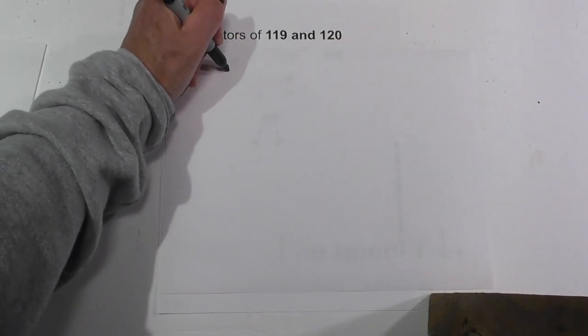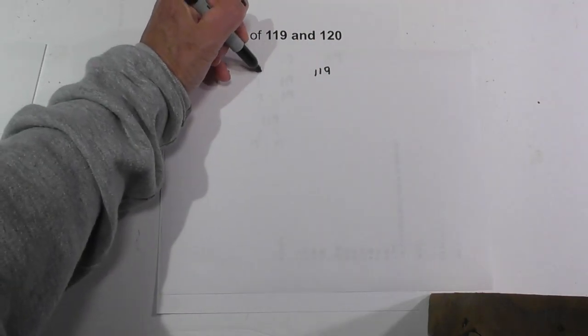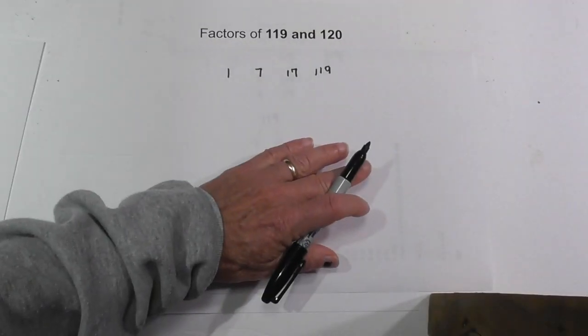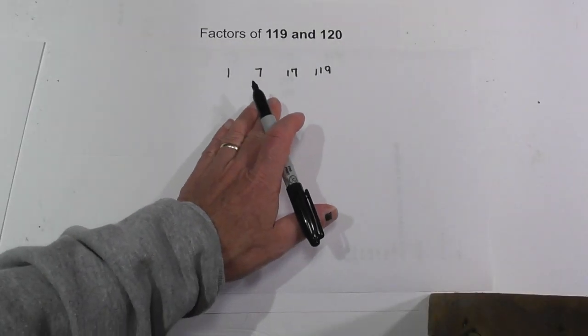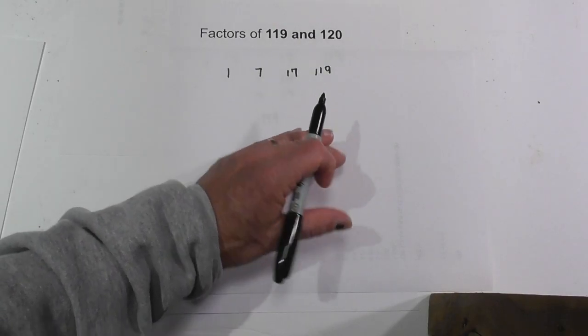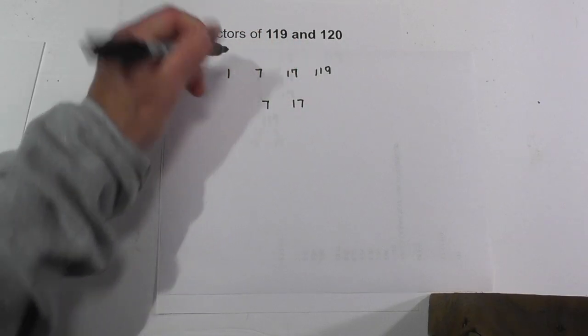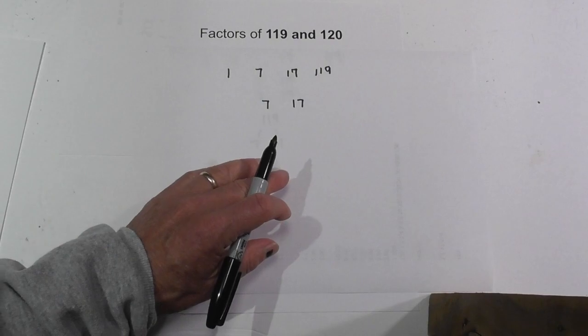With 119, I'll go 1 times 119, then 7 times 17. So the factors of 119 are 1, 7, 17, and 119. And the prime factors of 119 are 7 and 17 if you multiply these together.